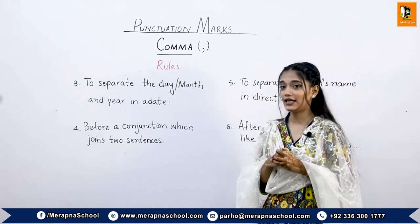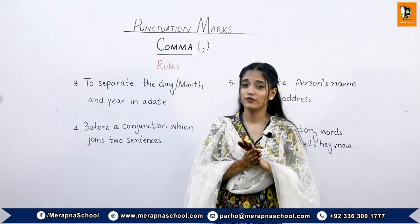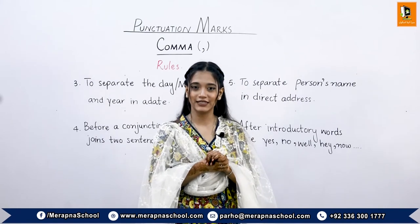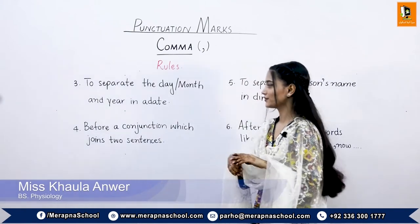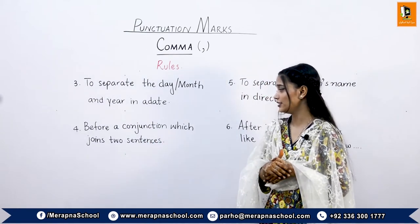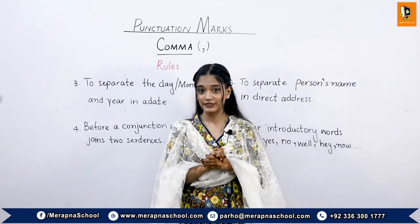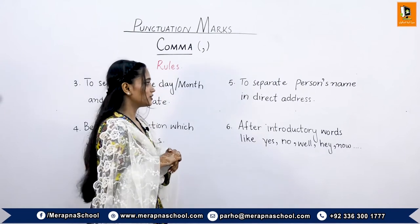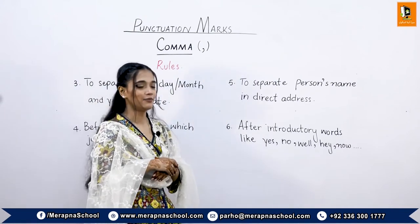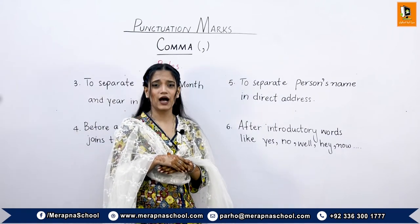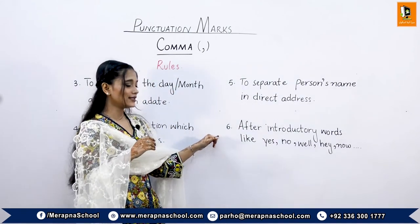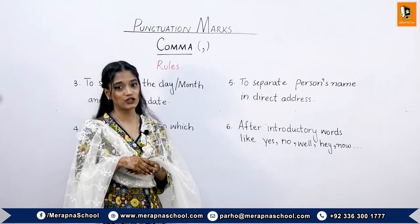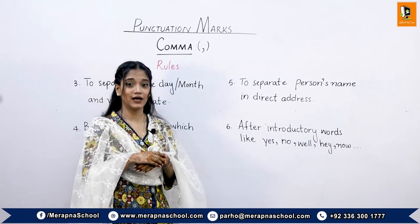The third rule is to separate the day, month, and year in a date — for example, 'March 23rd, 2013' and 'March 23rd, 2020.' The fourth rule is before a conjunction which joins two sentences — for example, 'Either you enjoy the rain, or you curse the rain.' The fifth rule is to separate a person's name in direct address — for example, 'Would you like to answer this question, Fatima?' The sixth rule is after introductory words like yes, no, well, hey — for example, 'Hey, this bike is mine.'